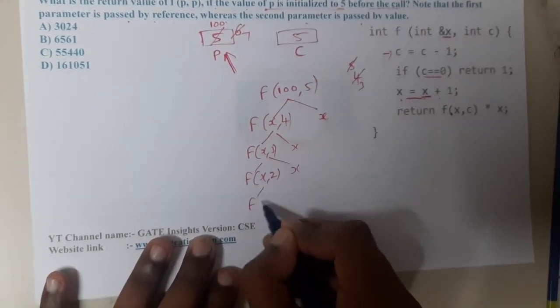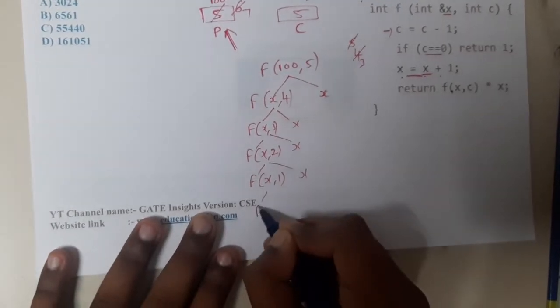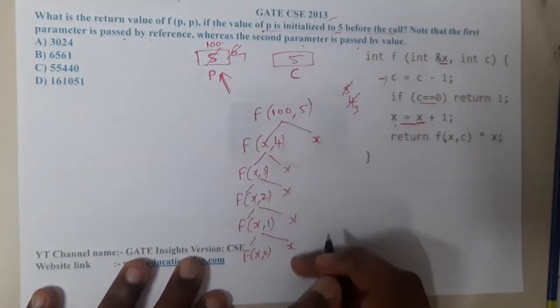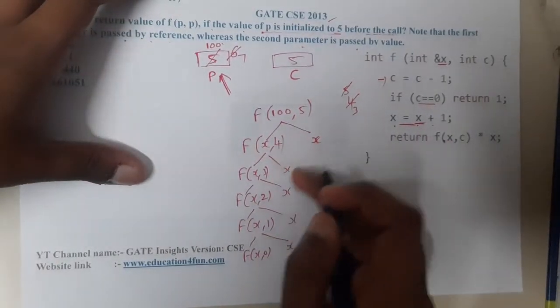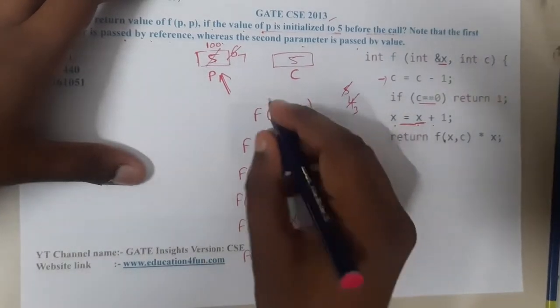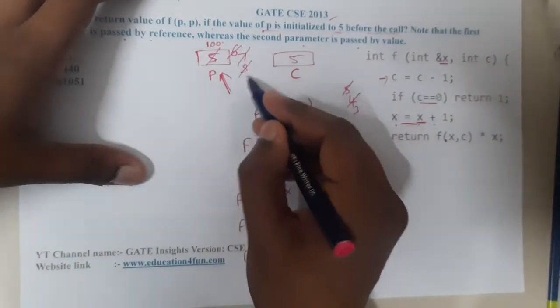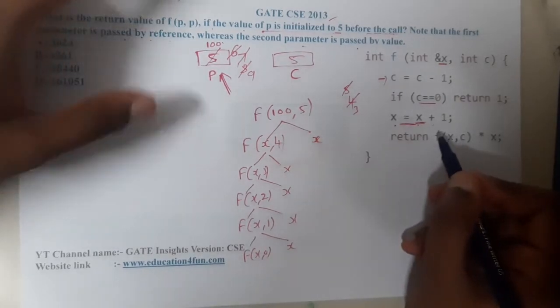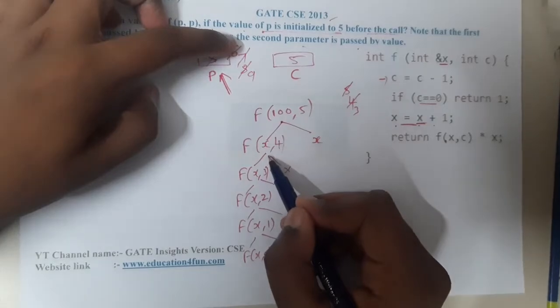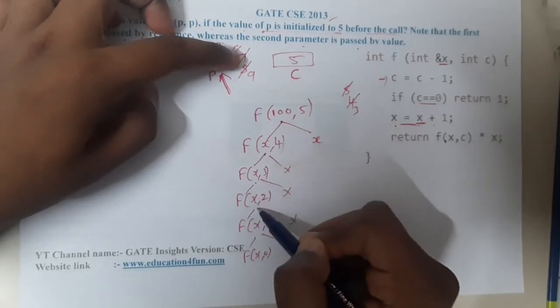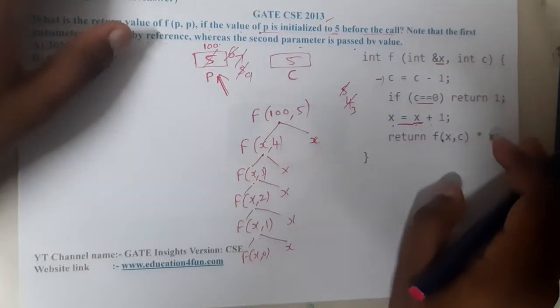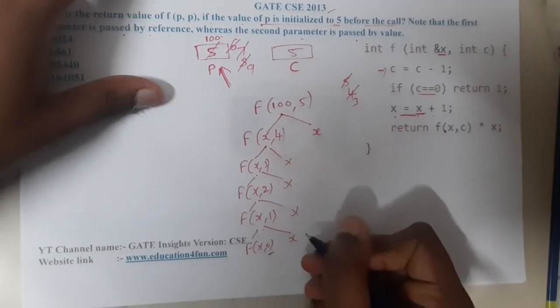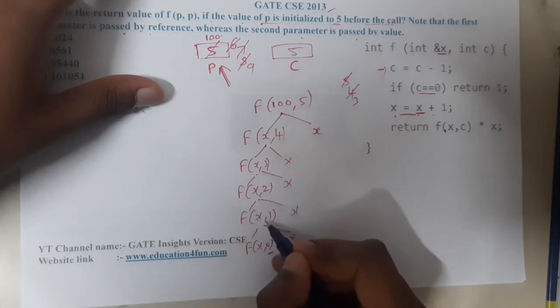f(x, 1), f(x, 0). At this point you will stop. How many times have you called? 1, 2, 3, 4, and 5. This value will be upgraded. Let me cross check. At this point it is 6, then 7, 8, 9, 10. It should go up to 10.